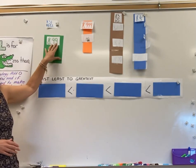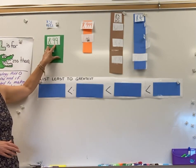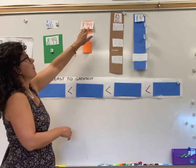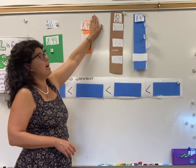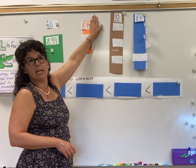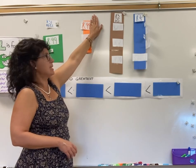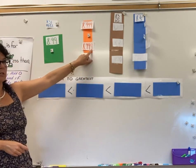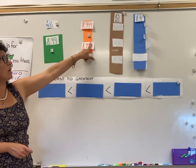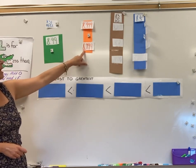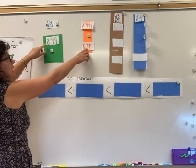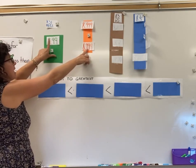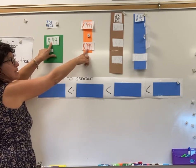This one already looks like money — $8.99. Now for this one, if I cover up the last nine, that would be $8 and 99 cents. I've made this dashed so that I'm ignoring that digit, so it's also $8.99. We'll come back to this in a second because these two are tied: $8.99 and $8.99.